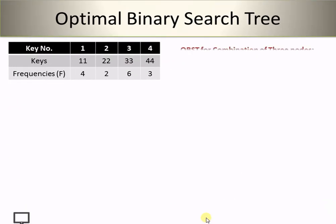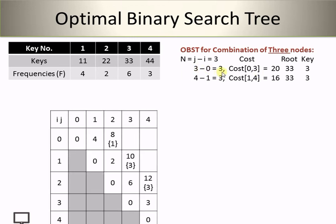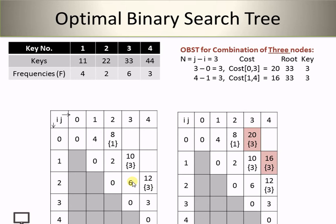I will put these values into my cost matrix. For the combination of 3 nodes where n = j minus i = 3, there are two combinations: cost(0,3) = 20 with root key 3, and cost(1,4) = 16 with root key 3. After updating the matrix, both values show root node key number 3, meaning node 33 is the root for both 3-node optimal trees.